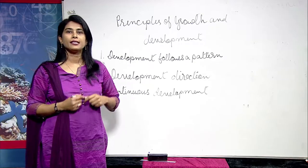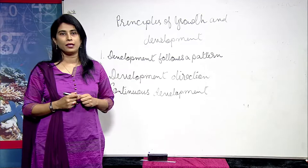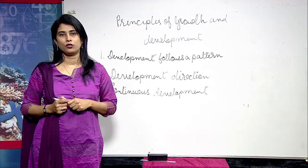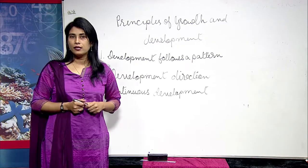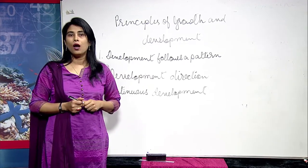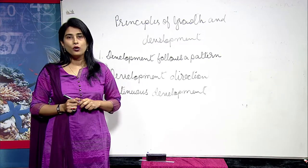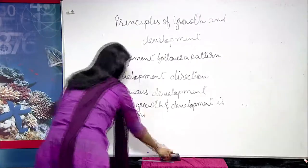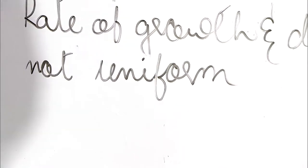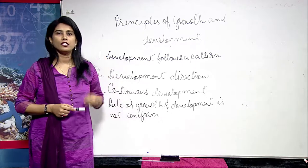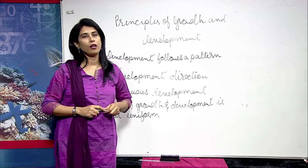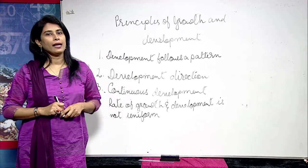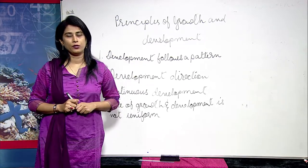Principle number three is continuous development. The process of development is continuous, starting from conception through birth to lifelong — from womb to tomb. Though development is continuous, the rate of growth and development is not uniform. Rapid changes occur in early years and slow down in later years of life.